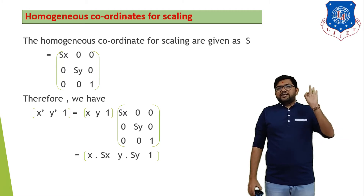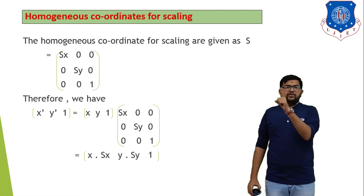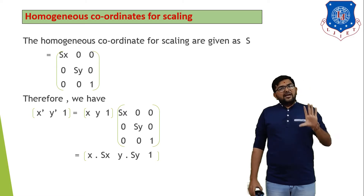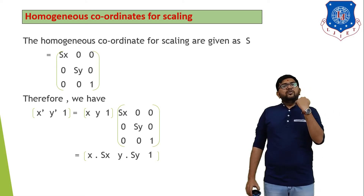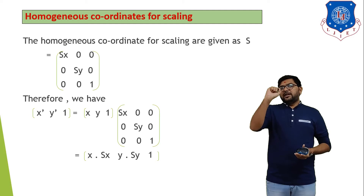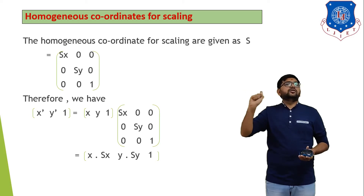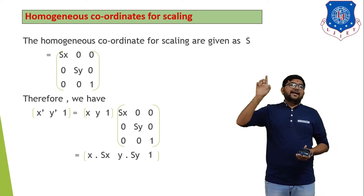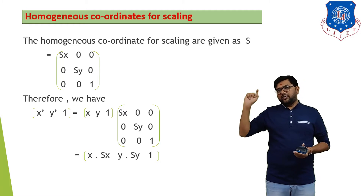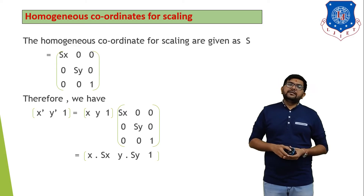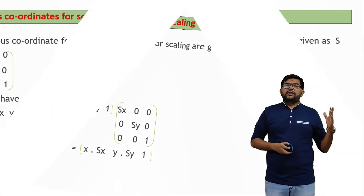In total we discussed three processes. First, translation: matrix is [1,0,0 / 0,1,0 / TX,TY,1], where TX and TY indicate translation in the X and Y axes. Second, rotation (anticlockwise): matrix is [cos θ, sin θ, 0 / −sin θ, cos θ, 0 / 0, 0, 1]. Third, scaling: matrix is [SX,0,0 / 0,SY,0 / 0,0,1], where SX and SY indicate scaling in the X and Y directions.